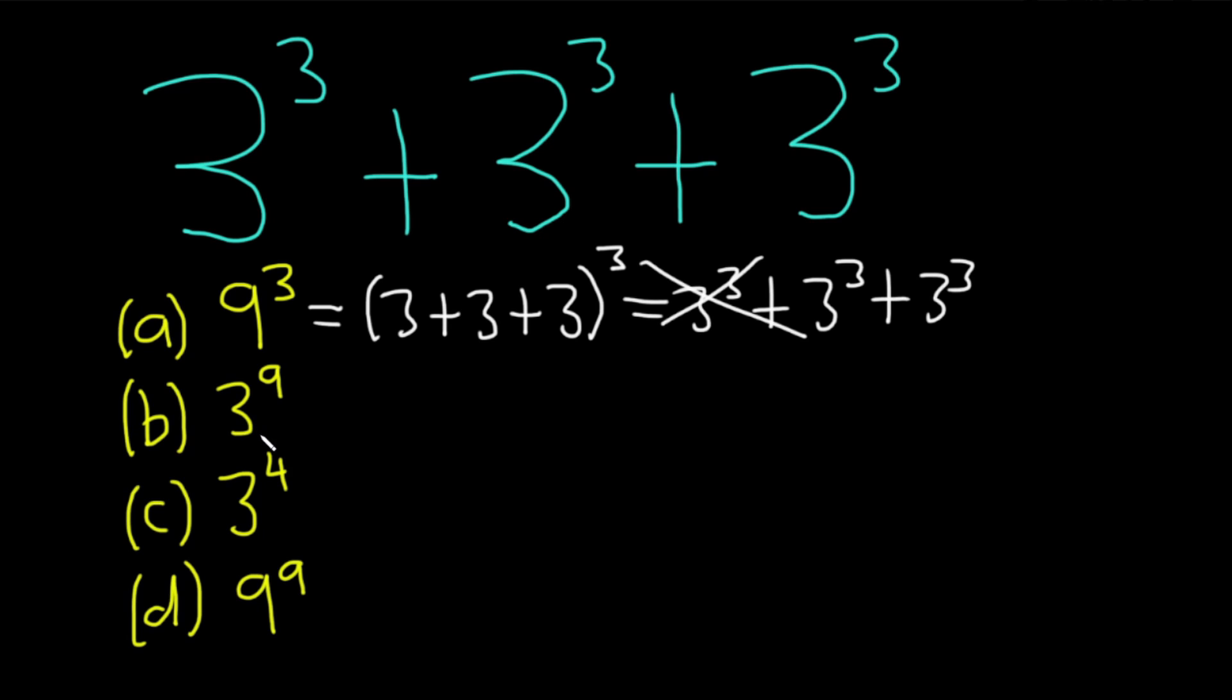The second choice given is 3 to the 9th, which again seems a little bit weird, because this is equal to 3 to the 3 plus 3 plus 3. So that's also not going to work, right? Because you would have to say that that's equal to 3 cubed plus 3 cubed plus 3 cubed. And that's not the case. Again, this is not some property that is true in mathematics. So not the case.